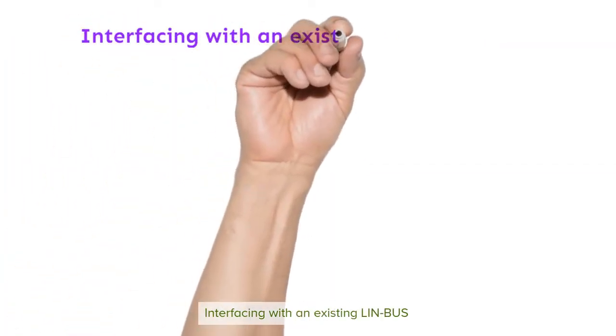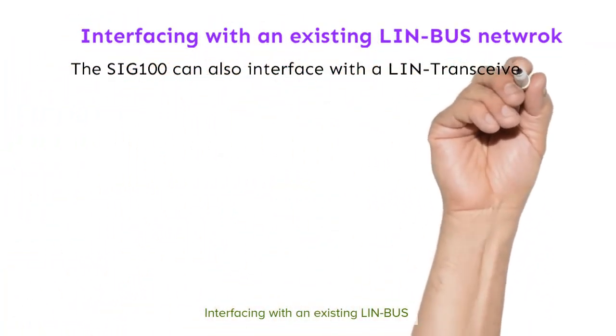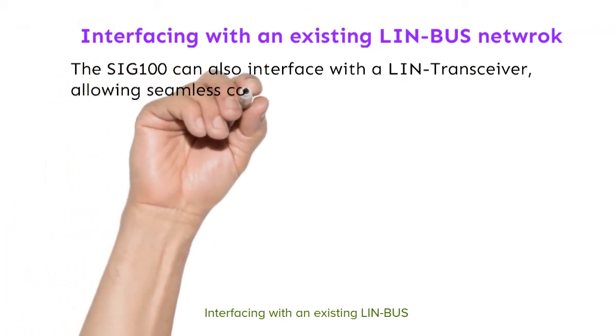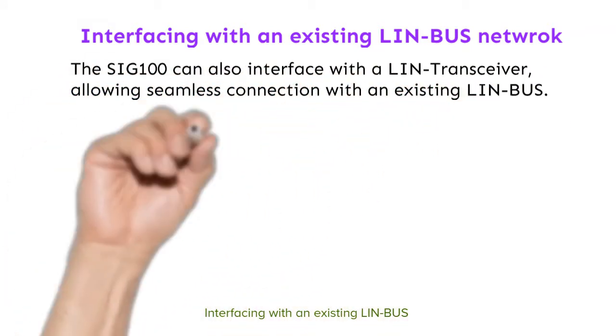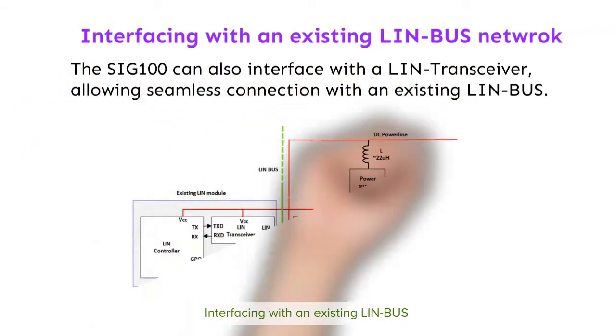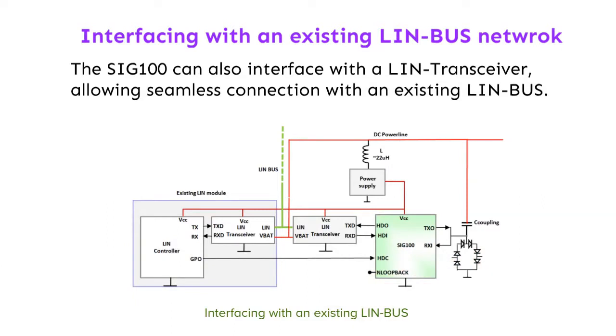Interfacing with an existing LIN bus network: the SIG100 can also interface with a LIN transceiver, allowing seamless connection with an existing LIN bus.